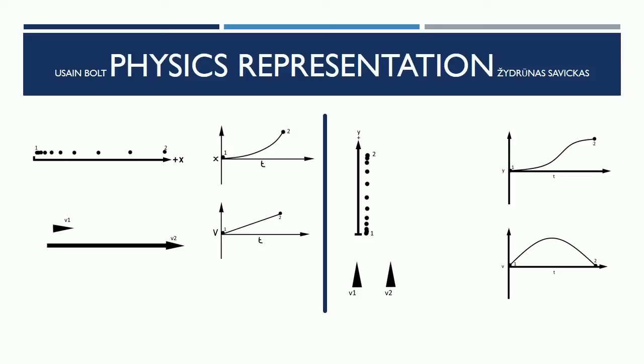Physics Representations: Usain Bolt's motion diagram shows that he speeds up, traveling in the positive direction east. The velocity vectors show that he starts from rest and ends in motion. The displacement graph and the velocity graph show that the acceleration is constant.